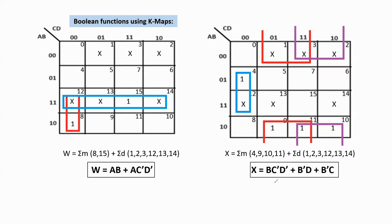For the second K-map, X equals these minimum values plus don't cares. One 1 is adjacent with a don't care to form the first group. Two don't cares are adjacent with two 1s to form the second group (a pair). Two more don't cares are adjacent with two others to form a third pair. For the first group: BC'D'. For the second group: B'D. For the third group, lying in the same rows (B') and last two columns (C=1): B'C. Therefore X = BC'D' + B'D + B'C.